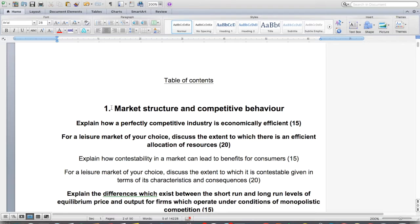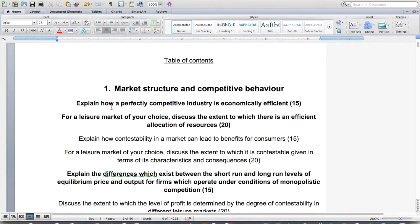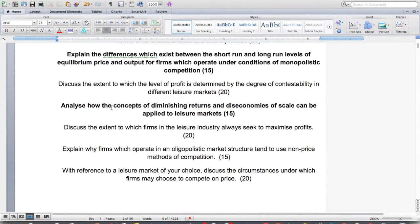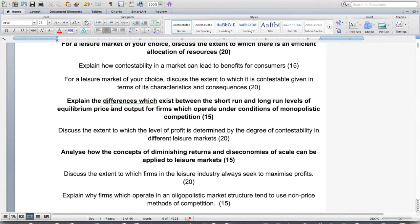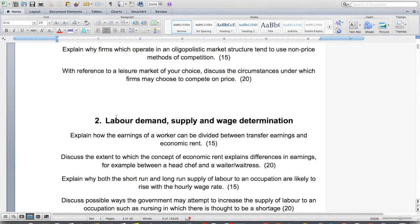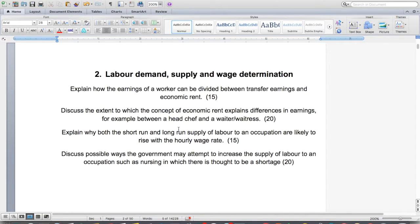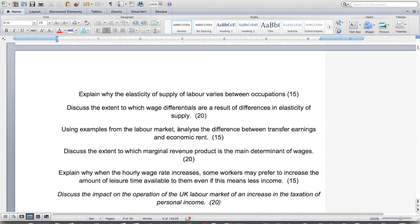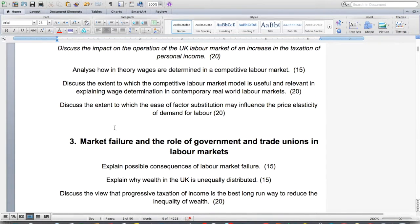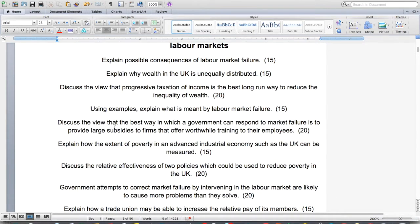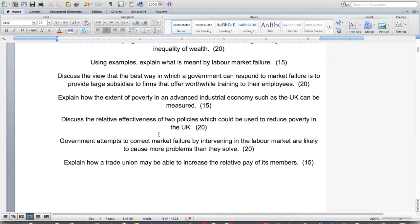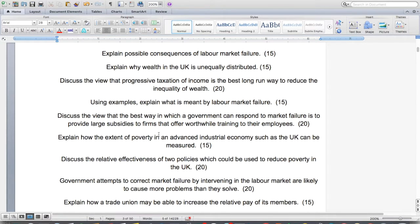You're going to first have a section for market structure and competitive behaviour, and I've taken some 15 mark and some 20 mark questions. Then I move on to section 2, which is labour demand, supply and wage determination. Some of these essays have been included in the 50 page pack. And finally, we're looking at section 3, which is market failure and the role of government and trade unions in labour markets. I haven't done all of these, but I have done about 20.